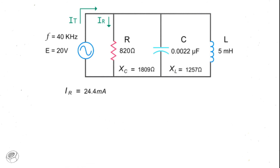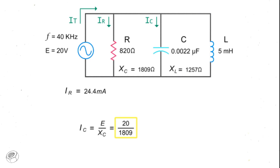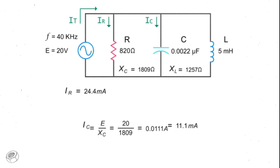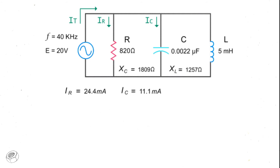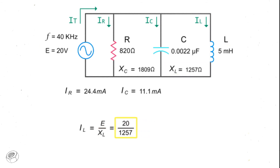To calculate the current through the capacitor, divide the source voltage by the capacitive reactance, or 20 volts divided by 1,809 ohms, which equals 11.1 milliamps. To calculate the current through the inductor, divide the source voltage by the inductive reactance, or 20 volts divided by 1,257 ohms, which equals 15.9 milliamps.